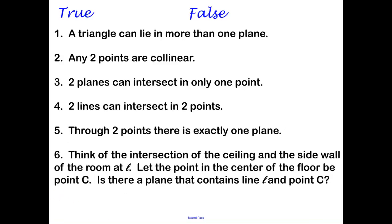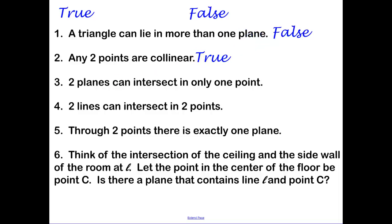Now some true or false questions. First: a triangle can lie in more than one plane. A triangle has three vertices — three points. Any three points make up a plane, so those three points define exactly one plane. That's false. Second: any two points are collinear — that's true, from our first postulate. Third: two planes can intersect in only one point — false, because two planes intersect in a line. Fourth: two lines can intersect in two points — false, because two lines intersect at exactly one point.